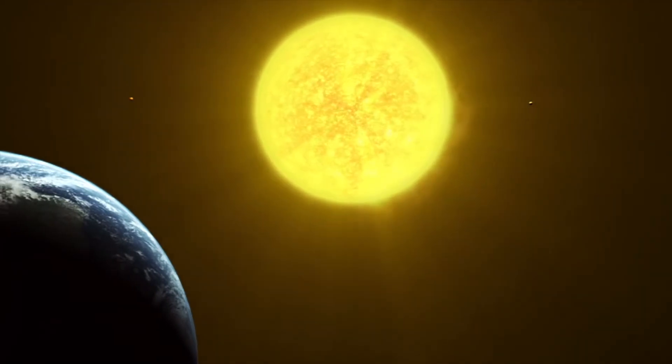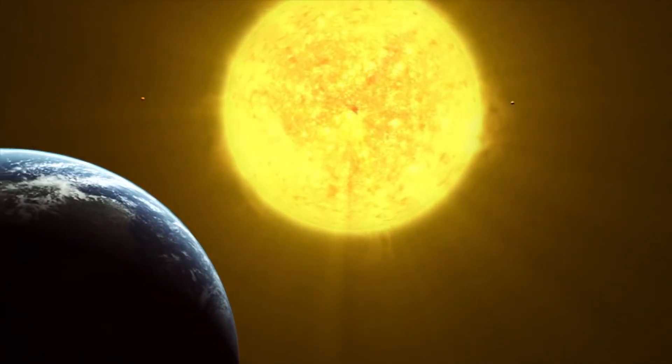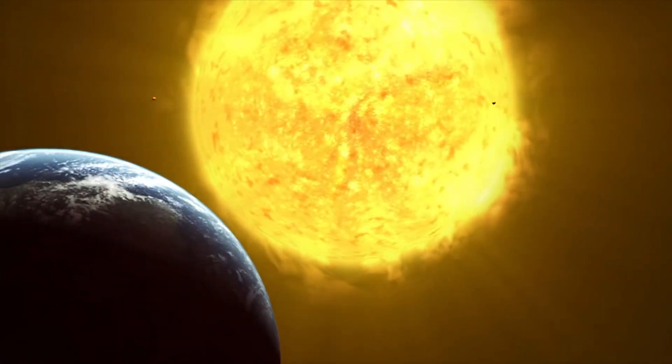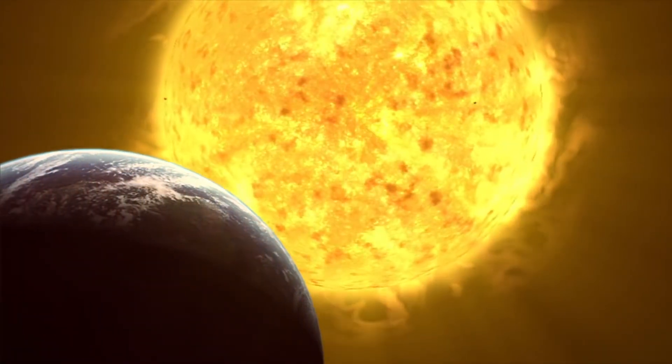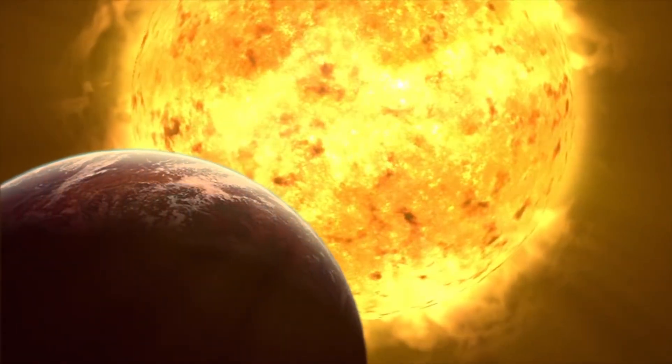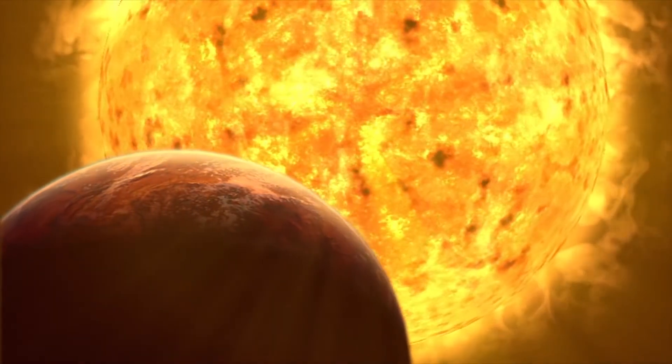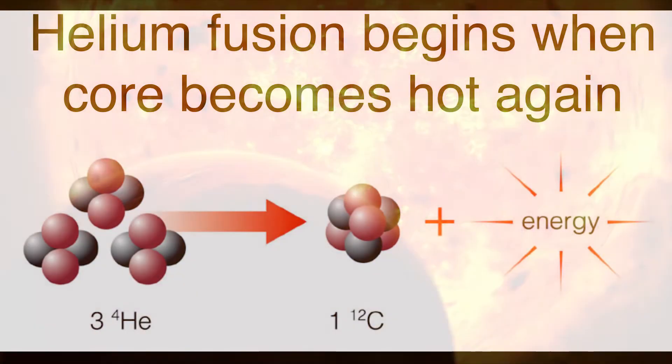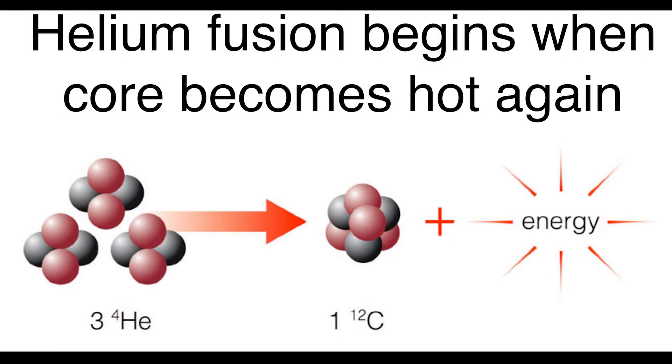The increasingly hot core also pushes the outer layers of the star outward, causing them to expand and cool, transforming the star into a red giant. These red giants can grow to more than 400 times the size of the original star.